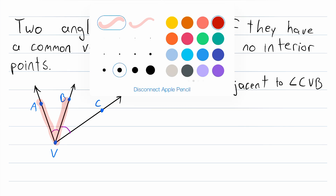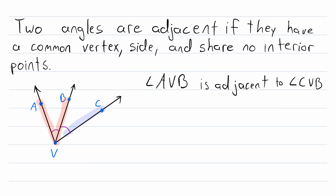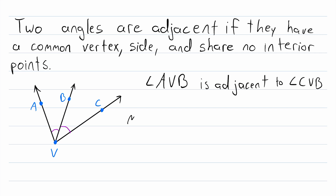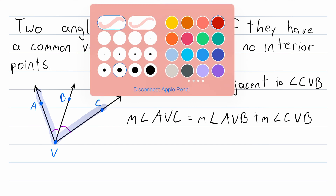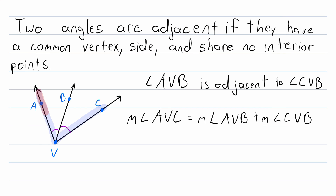Therefore, we can say that angle AVB is adjacent to angle CVB. They have a common vertex, a common side, and no common interior points. Since angle AVB is adjacent to angle CVB, we can add up their measures to get the measure of the bigger angle that they create together. The measure of the big angle created by two adjacent angles is equal to the sum of the measures of the adjacent angles.